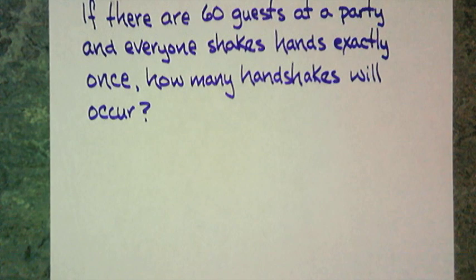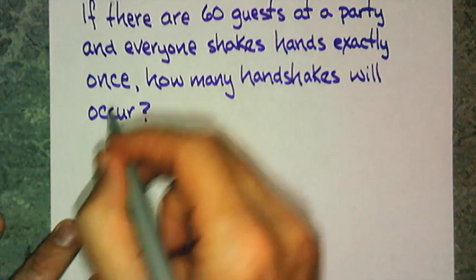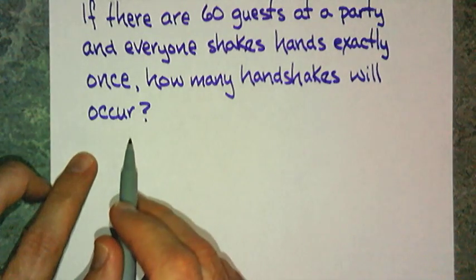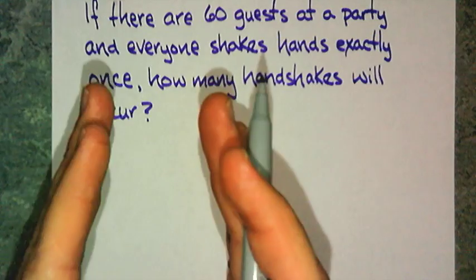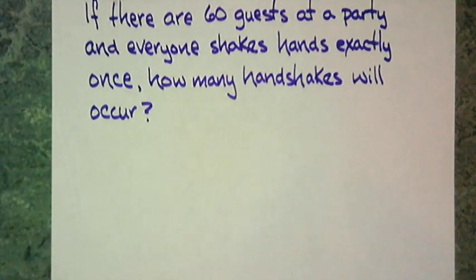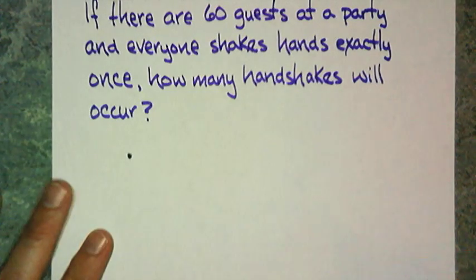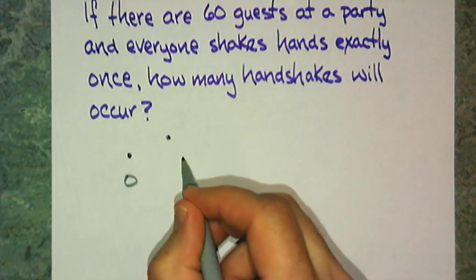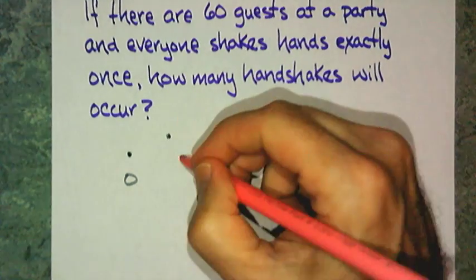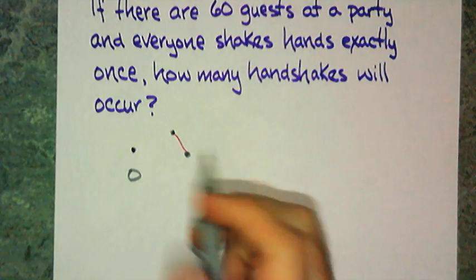Our last problem for the evening is a handshake problem. If there are 60 guests at a party and everyone shakes hands exactly once, how many handshakes will occur? So, I don't have 60 people at my house right now, and I'm going to make a model that will demonstrate this. I was told that no matter how bad the problem is, there's a smaller problem that is just as bad. So, let's make this smaller. Instead of 60, let's pretend I'm by myself. How many handshakes will occur? And the answer, of course, would be 0. If there are 2 people at my party, there will be 1 handshake.